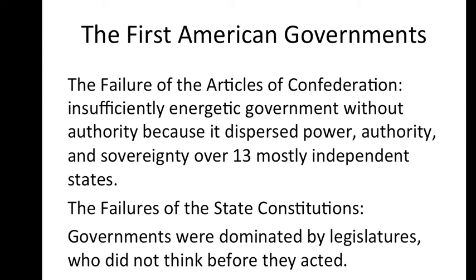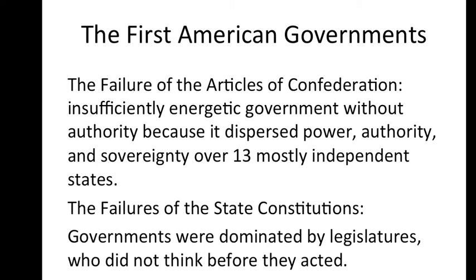Why did the Americans adopt these governments? The Americans built these governments because they made a judgment about how to avoid the problems associated with the British monarchy, and their governments would not, they pledged, make the same British mistakes.